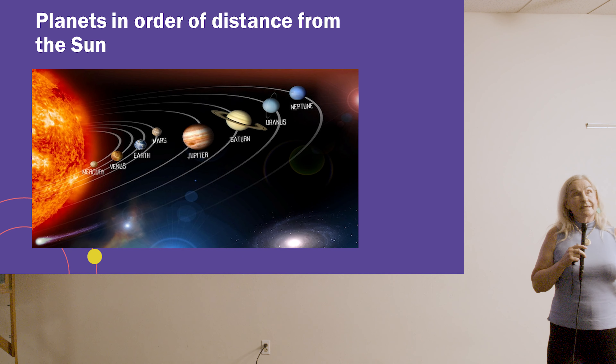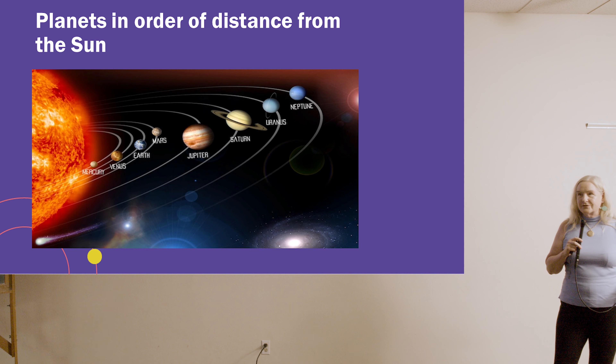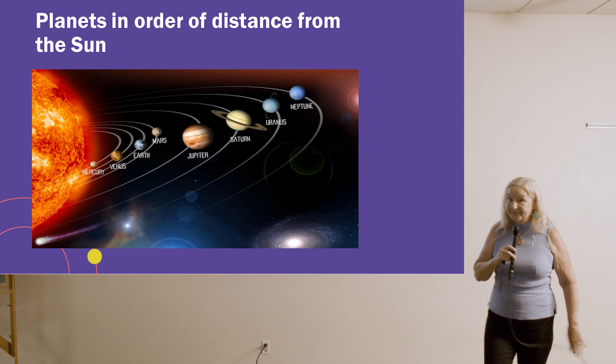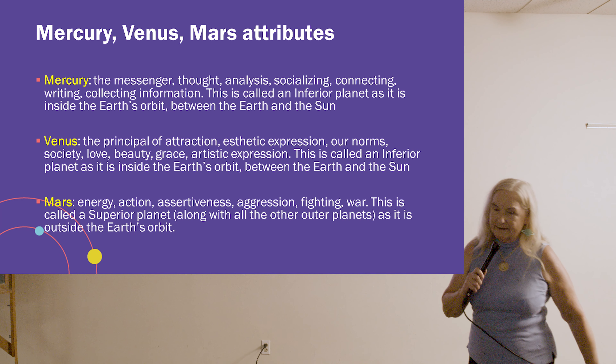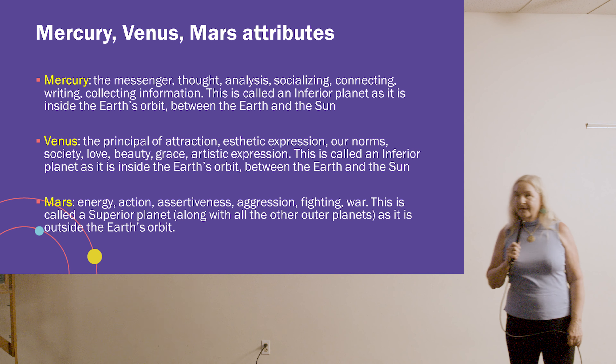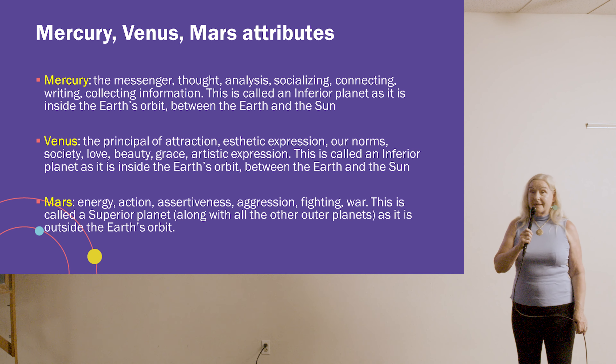Moving on to Venus — we always think of Venus as love, but it's also artistic, beautiful, money, and our social norms. When we think about retrogrades, Venus being associated with social norms means something may happen on a more global basis during a Venus retrograde. Our ideas of beauty may change, our ideas of art may change, and women may become more important.